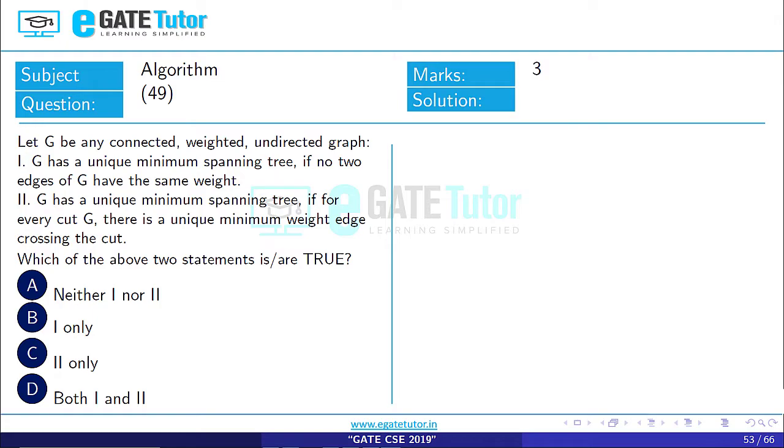Question 49 is asked from subject algorithm. Let G be any connected weighted undirected graph. Statement 1: G has a unique minimum spanning tree if no two edges of G have the same weight.